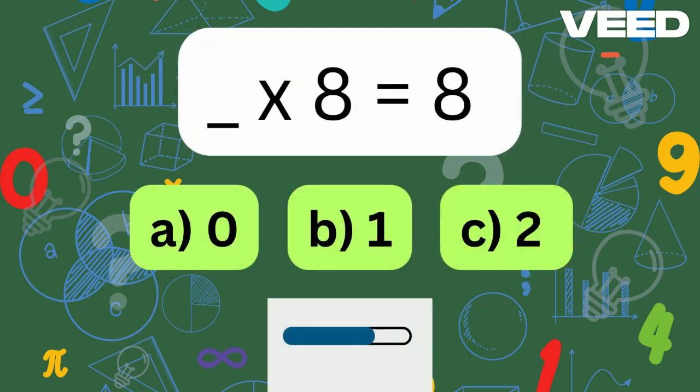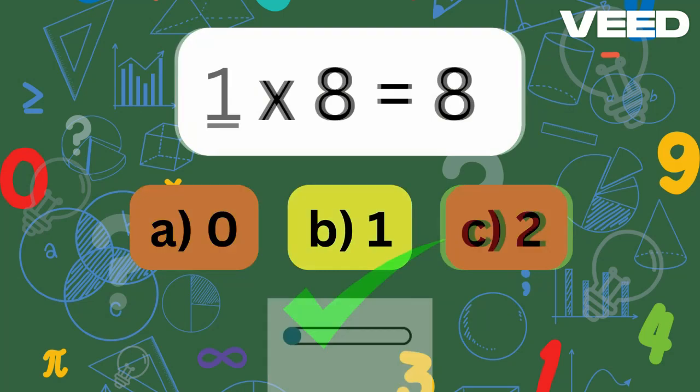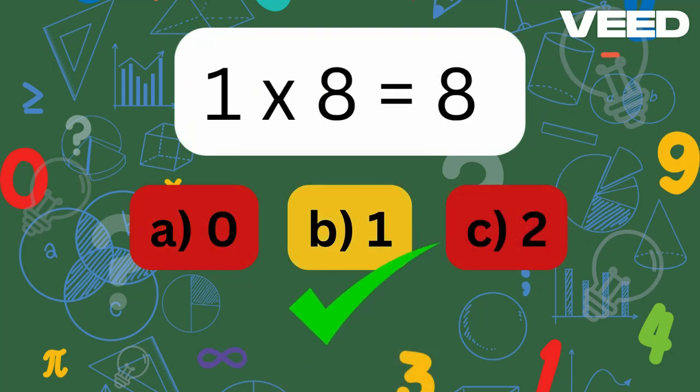What times 8 is equal to 8? 1 times 8 is equal to 8.